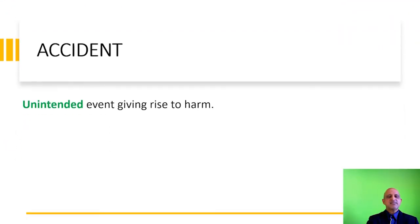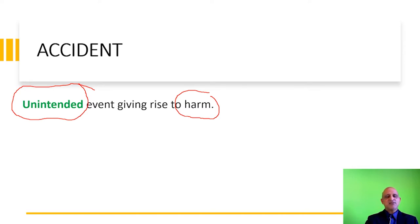An accident is an unintended event giving rise to harm. For example, using the same case — you have sulphuric acid on the table, you spill it, and you have a burn injury on your skin. That constitutes an accident. There was no intention to spill the acid on your skin; however, it occurred. So it is unintended.